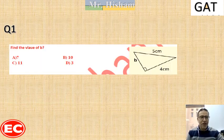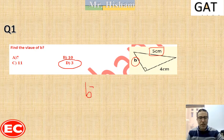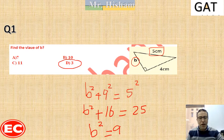For question 1, find the value of B. We have a right angle triangle where one leg is 4, the other leg is unknown, and the hypotenuse is 5. From the 3, 4, 5 triple, the answer is 3. Writing the steps: B squared plus 4 squared equals 5 squared, so B squared plus 16 equals 25. Subtracting 16 from both sides, B squared equals 9, and taking the square root, B equals 3.